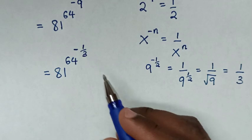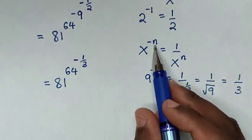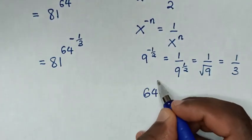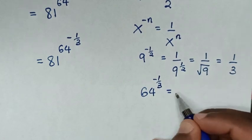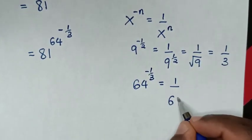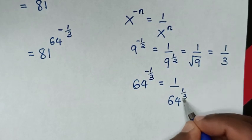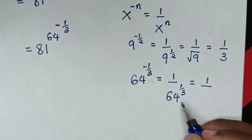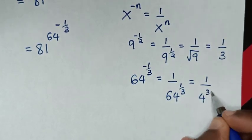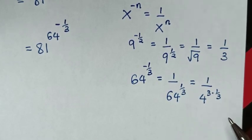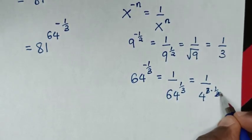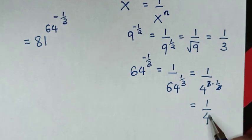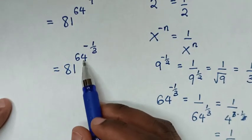From this power, it is in the form of x power of negative n equals 1 over x power of n. So 64 power of negative 1 over 3 equals 1 over 64 power of 1 over 3. Now 64 is the same as 4 power of 3, times power of 1 over 3. To simplify, the 3 and 3 will cancel, so it equals 1 over 4 power of 1, which is 1 over 4. We substitute 1 over 4 into this power.